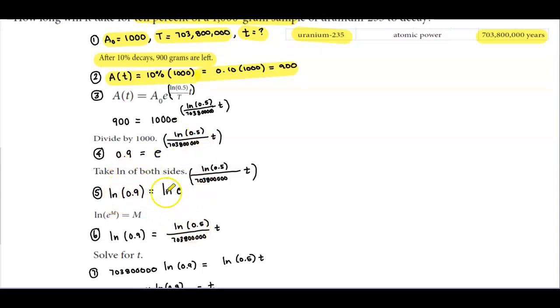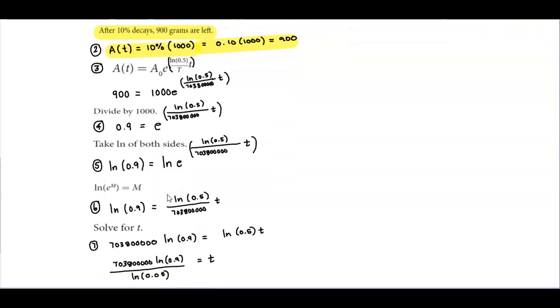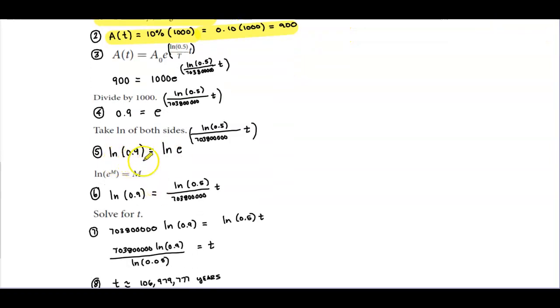And now we want to be able to get this variable out so we can solve for it. So in order to do that, we're going to take a natural log of both sides. So now I take the natural log of 0.9 and the natural log of this e to the natural log of 0.5 divided by 703,800,000 t.